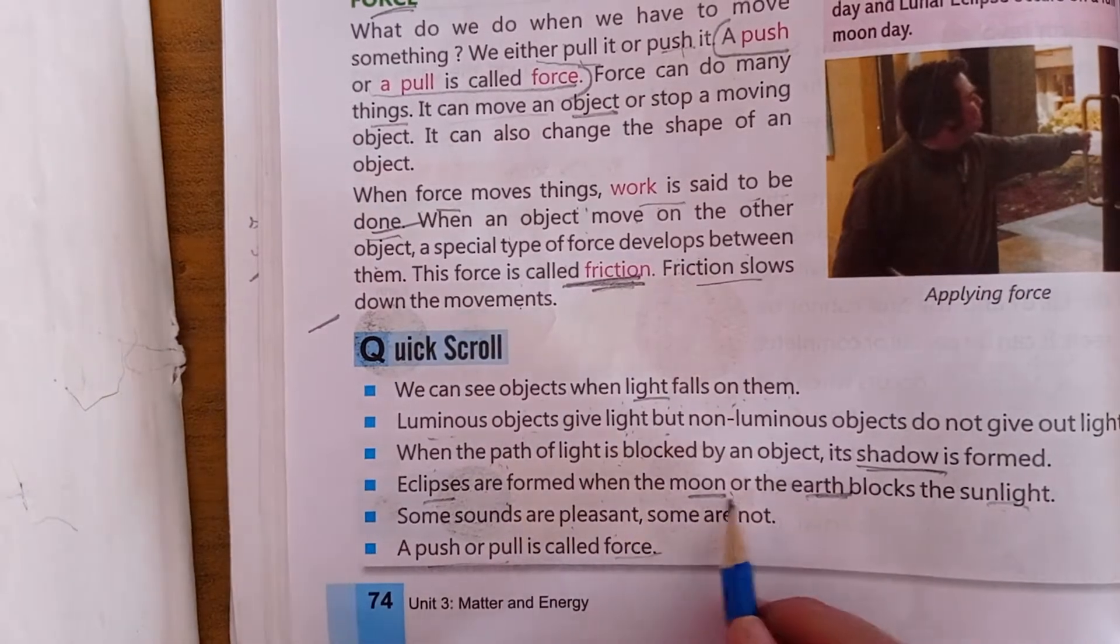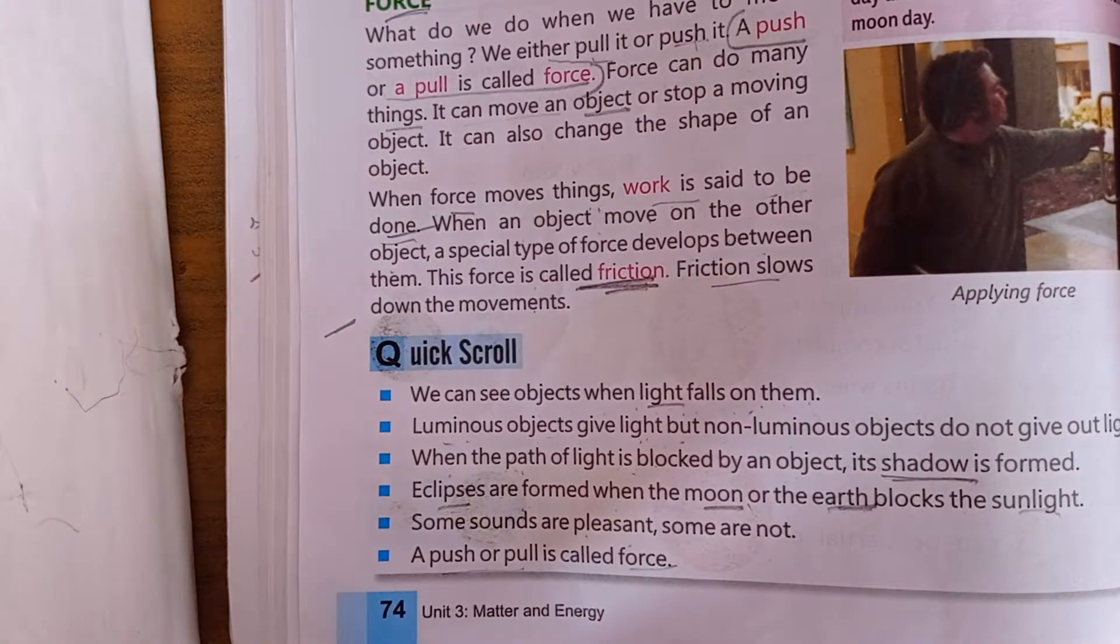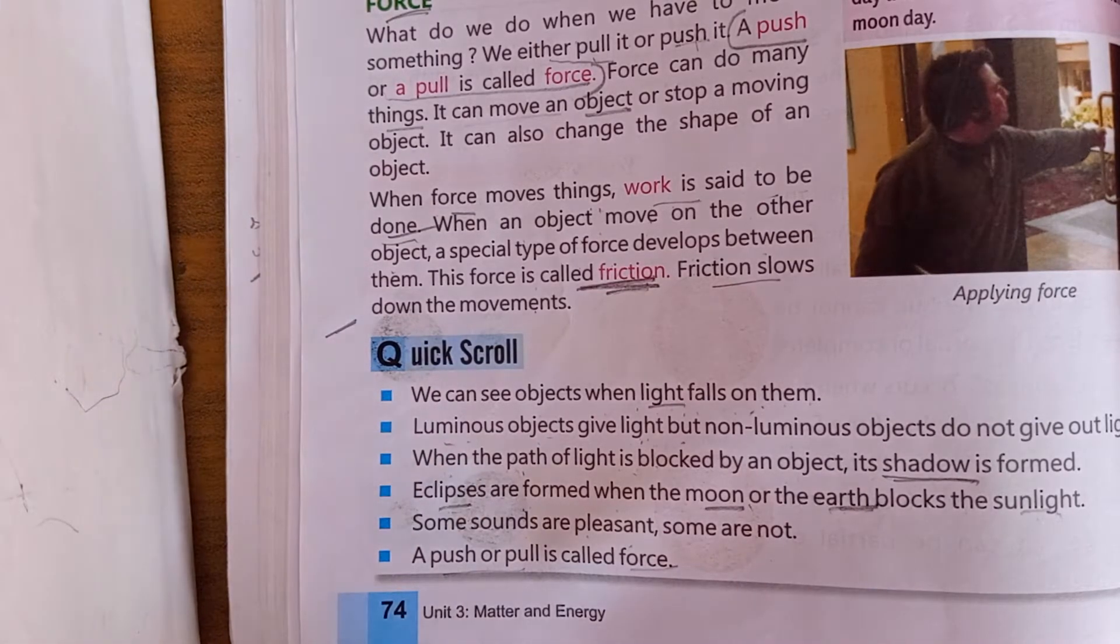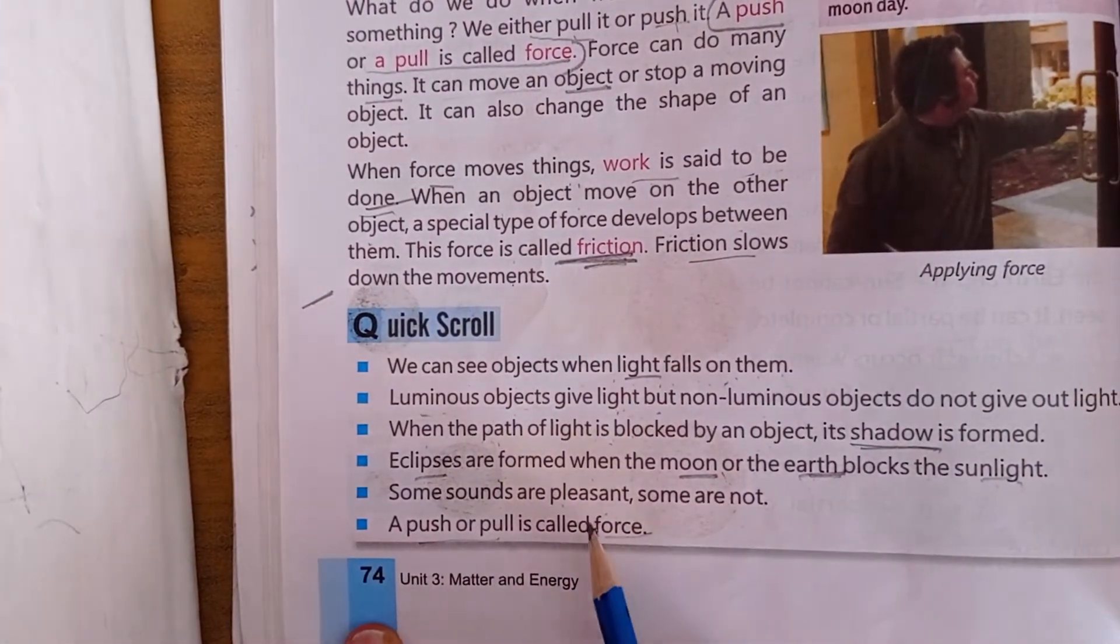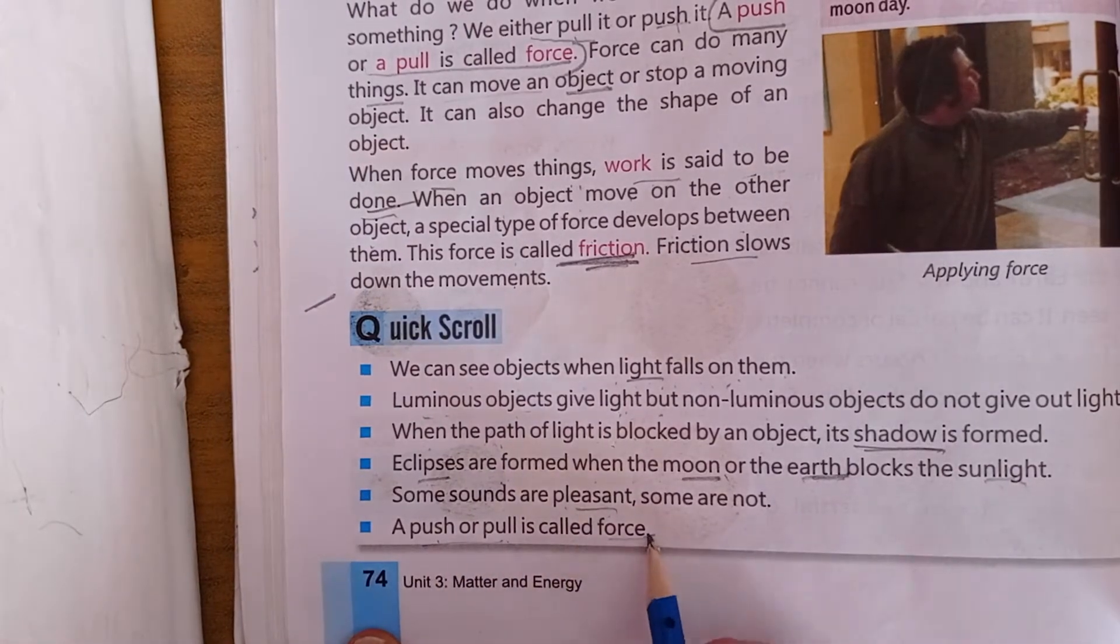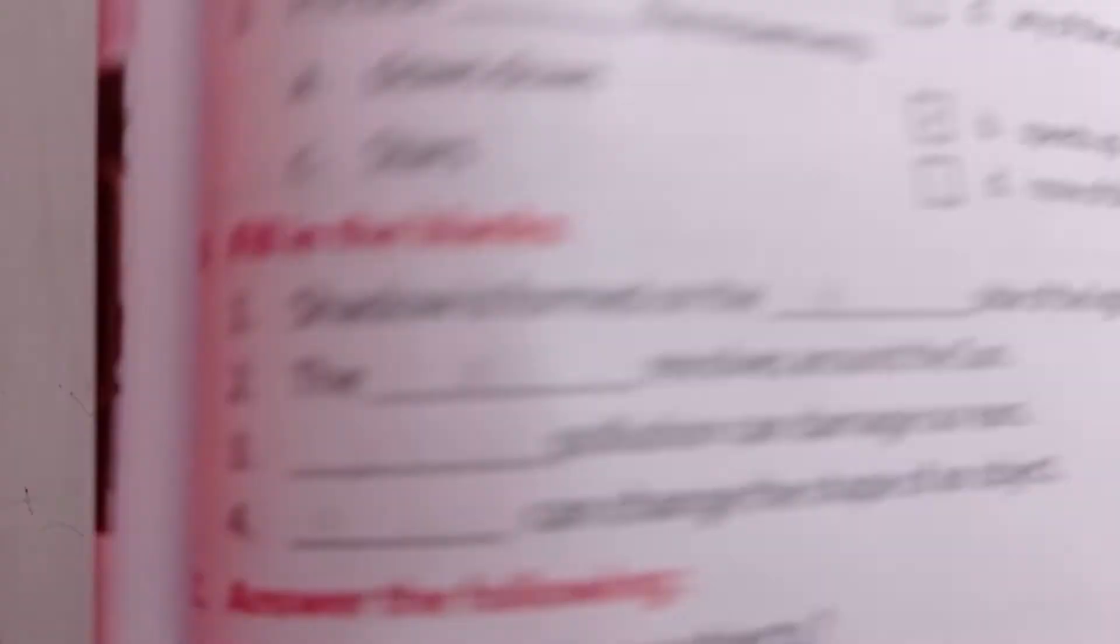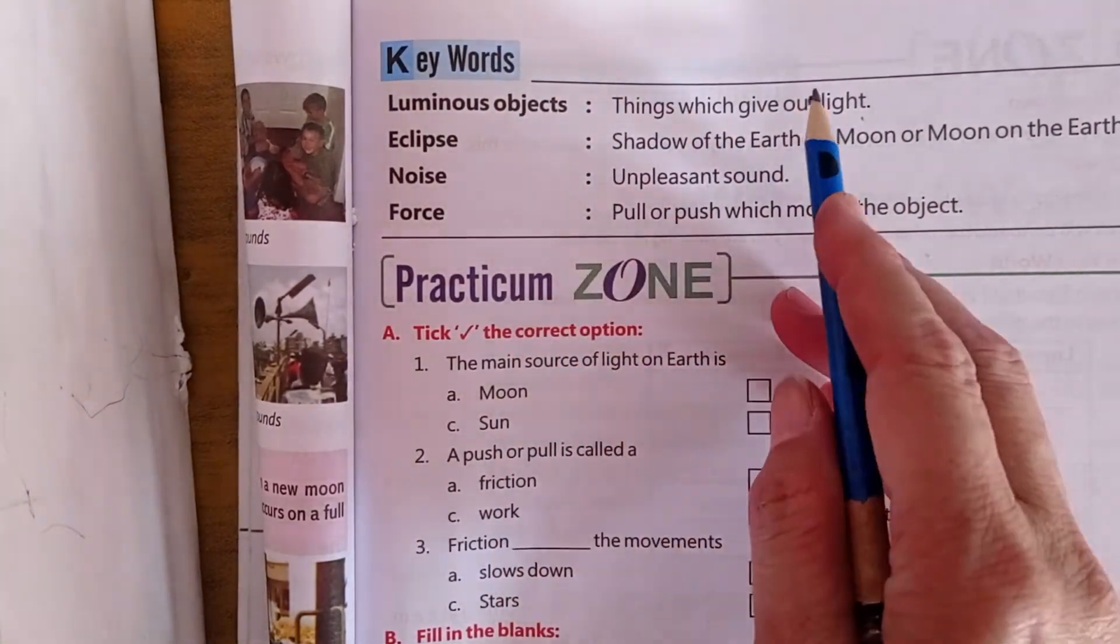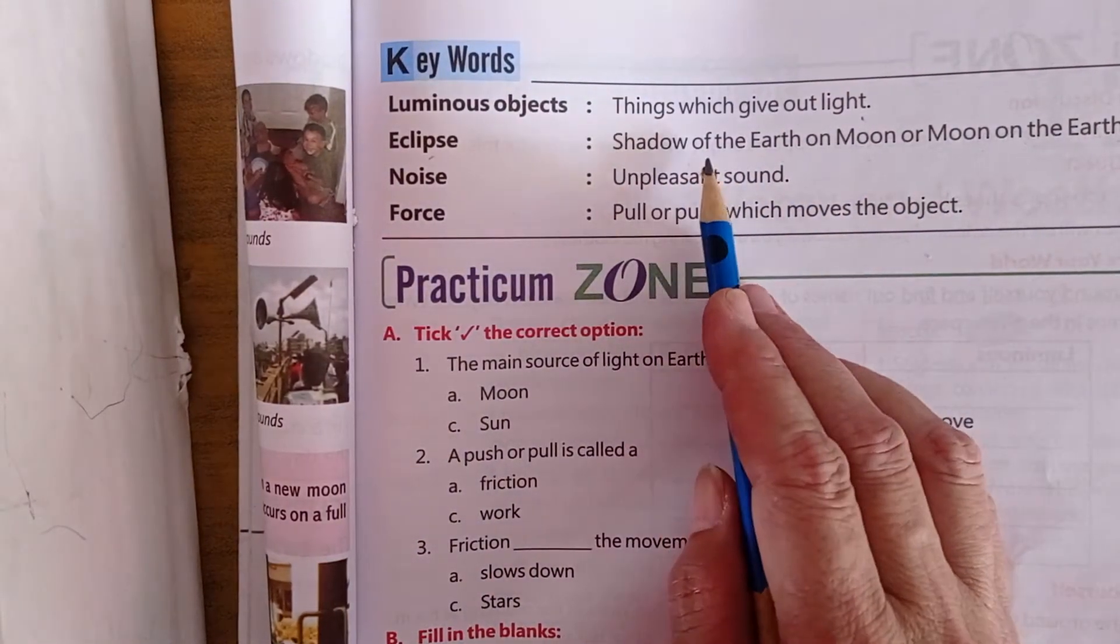Eclipses are formed when the moon or the earth blocks the sunlight. Now you know that the sun is in the middle. The earth revolves around the sun and the moon revolves around the earth. So any eclipse occurs when the moon or the earth can stop the light.